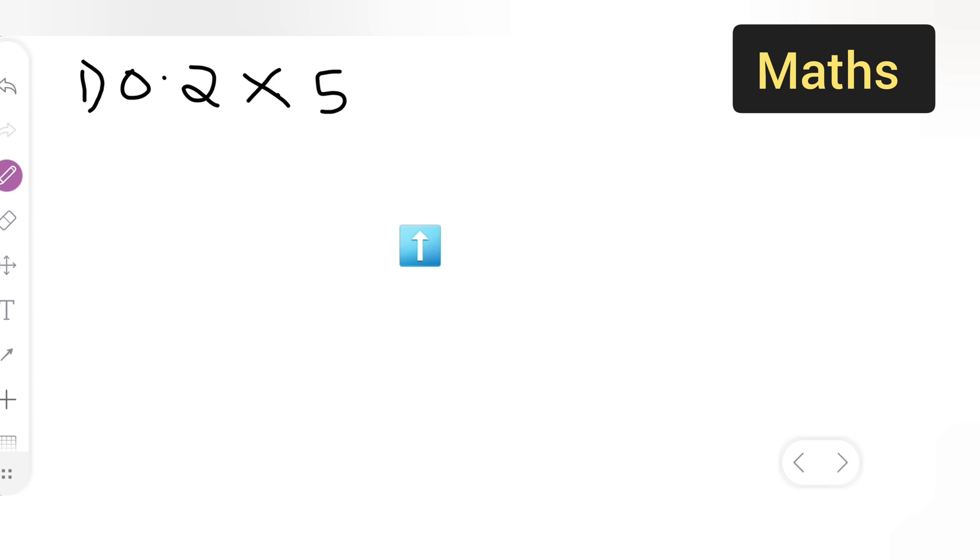Let us multiply this. First, you will have to write down 0.2 multiplied by 5. Now, what you can do is remove the decimal point.